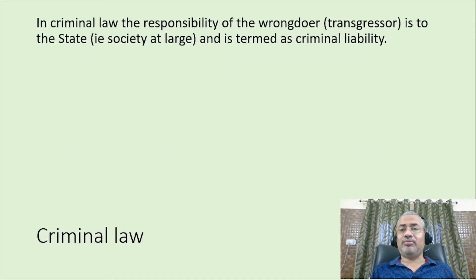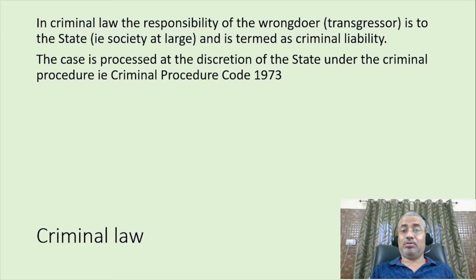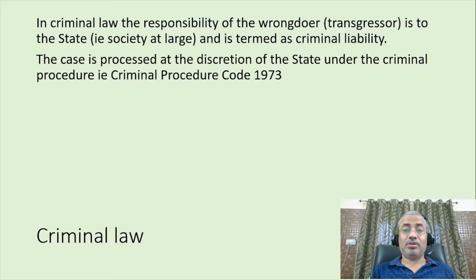In criminal law, the responsibility of the wrongdoer's transgression is to the state — that is, society at large — and is termed as criminal liability. The case is processed at the discretion of the state under the Criminal Procedure Code 1973. The injured may or may not be interested in pursuance of the case, but since the wrong is against society and society is at peril, it is the state who pursues this crime.